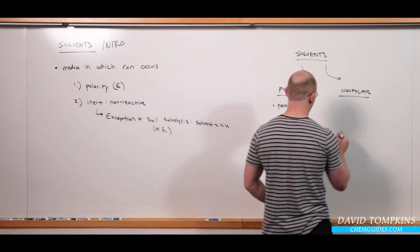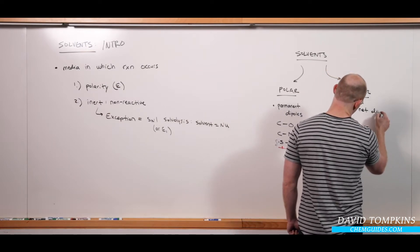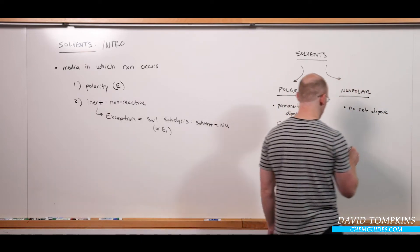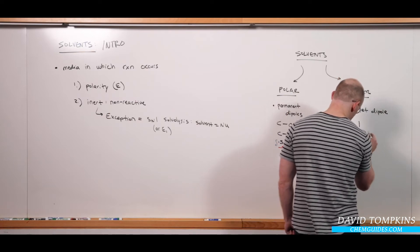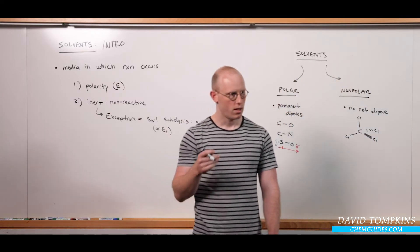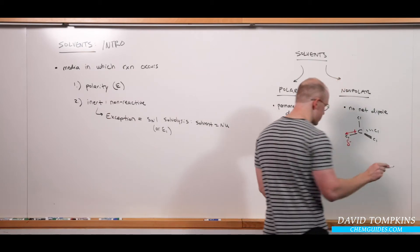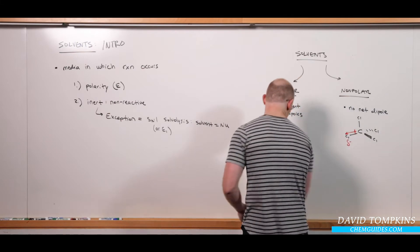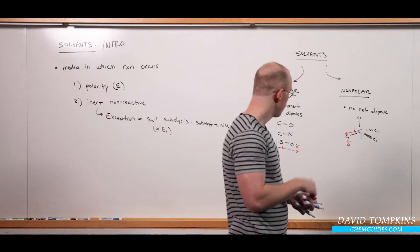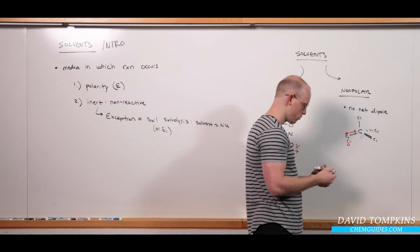Conversely, nonpolar compounds, or solvents, are going to have no net dipole. Even if there are individual bond dipoles, for example, in this commonly used organic solvent, tetrachloromethane, each of the carbon-chlorine bonds has a very polar dipole that points or favors chlorine, where there's excess electron density at chlorine, and there's a lack of electron density at carbon. However, because of the great symmetry of this molecule, it is tetrahedral, all of these bond dipoles have a net dipole of zero, or they cancel out.